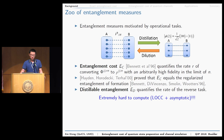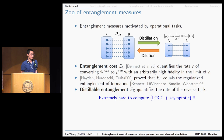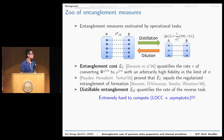Let me briefly take you around this zoo. First, there are basic entanglement measures motivated by operational tasks. Bell states are the currency of entanglement. Two key tasks are motivated by transformations between a given state and Bell states: entanglement distillation and entanglement dilution. For entanglement dilution, the entanglement cost EC quantifies the optimal rate at which you can transform Bell states to your target state with arbitrarily high fidelity in the asymptotic limit. A remarkable result is that this entanglement cost equals the regularized entanglement of formation, proved by Hayden, Horodecki, and Winter in 2001.